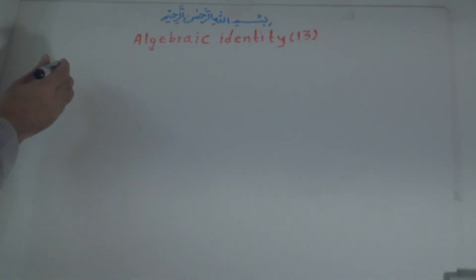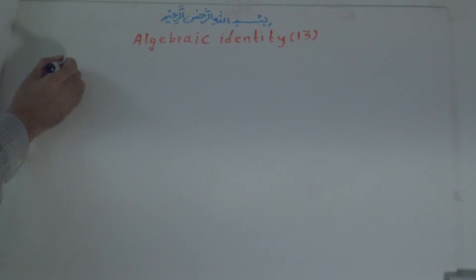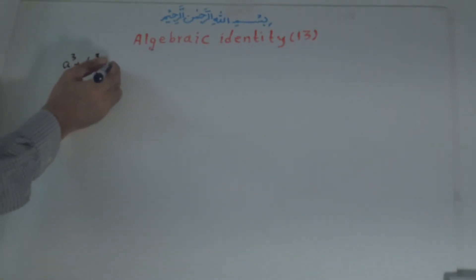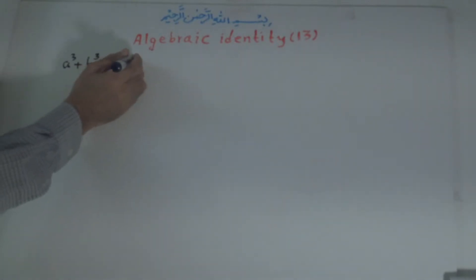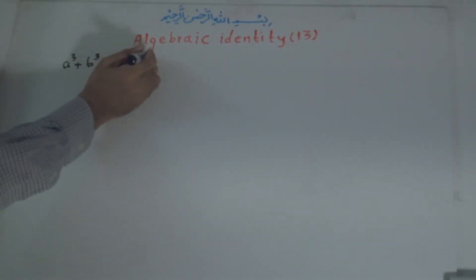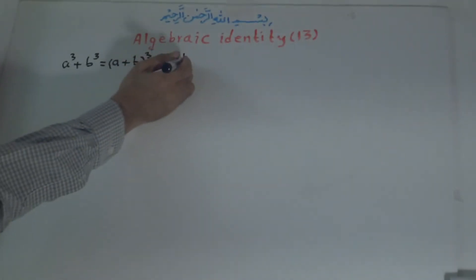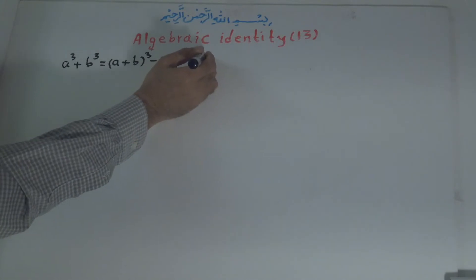Algebraic Identity number 13 states that a to the power of 3 plus b to the power of 3 is equal to a plus b, all to the power of 3, minus 3ab times a plus b.